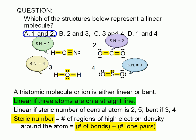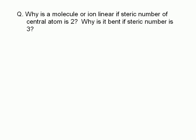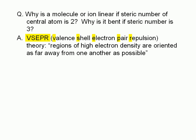Let's try to understand how the steric number determines the shape of our triatomic molecule. The explanation is actually quite simple. We know that electrons repel each other. Therefore, we expect regions of high electron density around an atom to be as far away from each other as possible. This idea is known as VSEPR theory, which stands for valence shell electron pair repulsion.